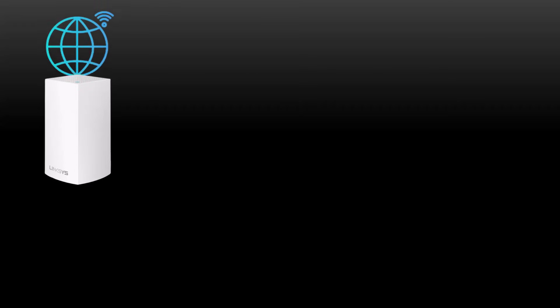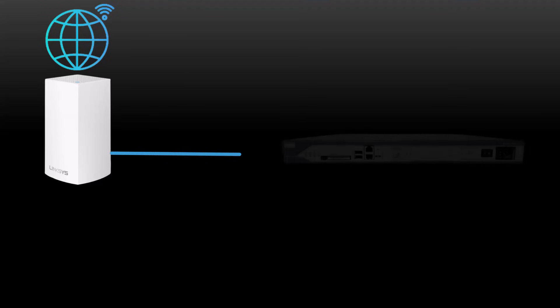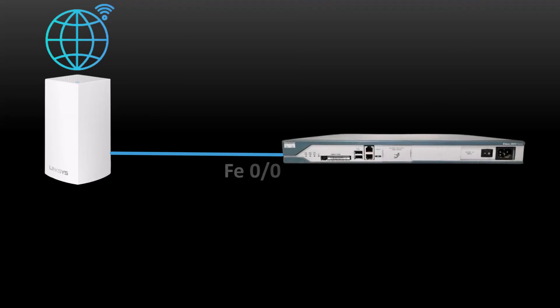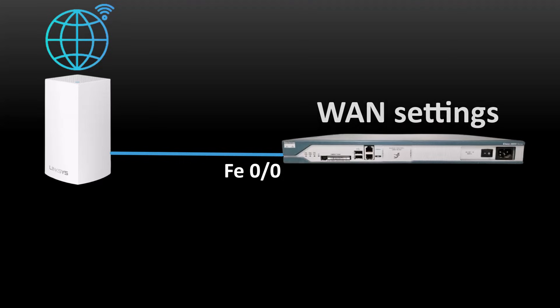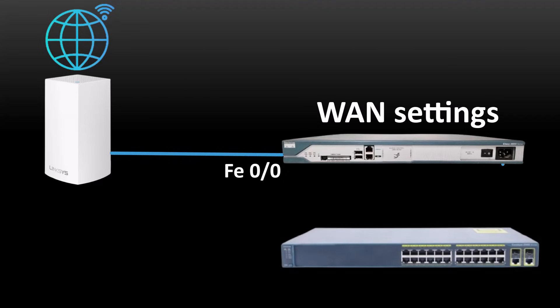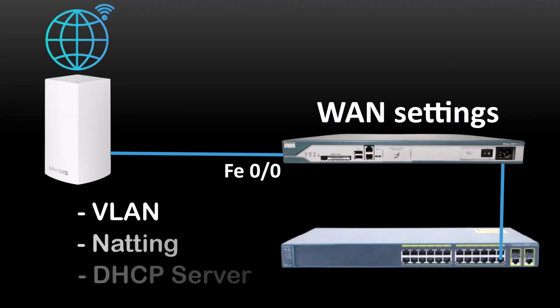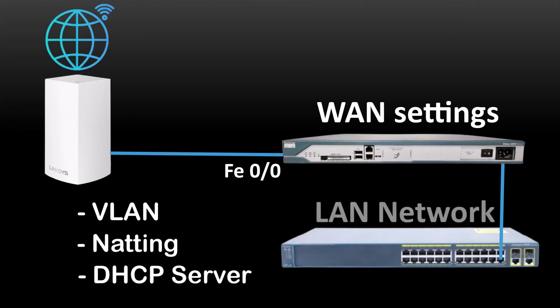This is my ISP internet router, and the internet is working on it. I will connect the LAN port of this ISP router to the FastEthernet 0/0 port of my Cisco router. Then, we will configure the WAN settings on the Cisco router to set up the internet connection. In the next video, I will add a Cisco switch, connect it to the router, and configure multiple VLANs, NATing, and a DHCP server on the switch to create a LAN network.